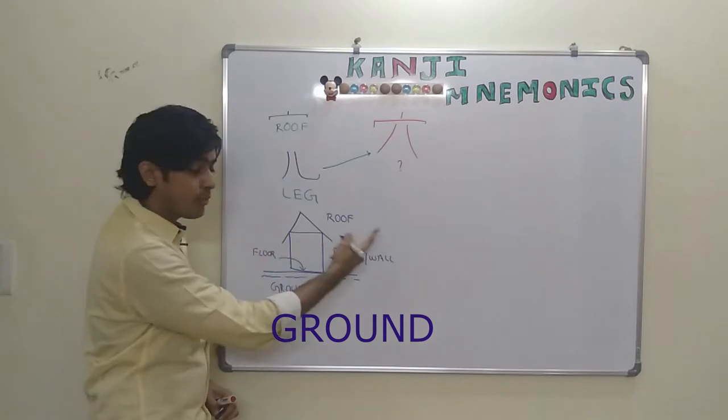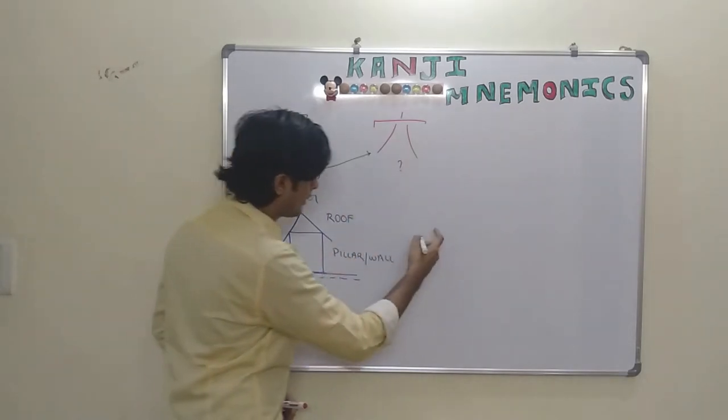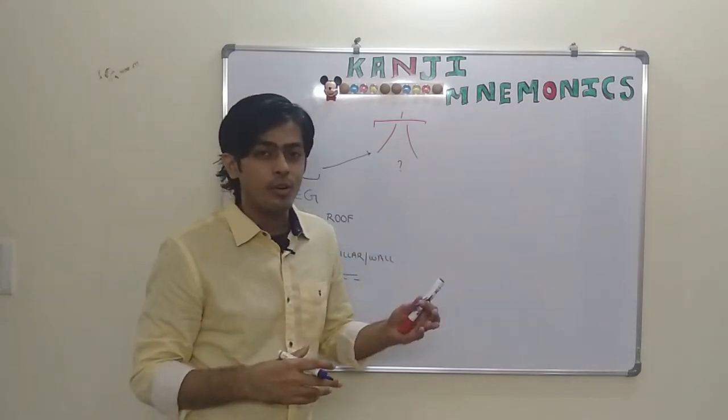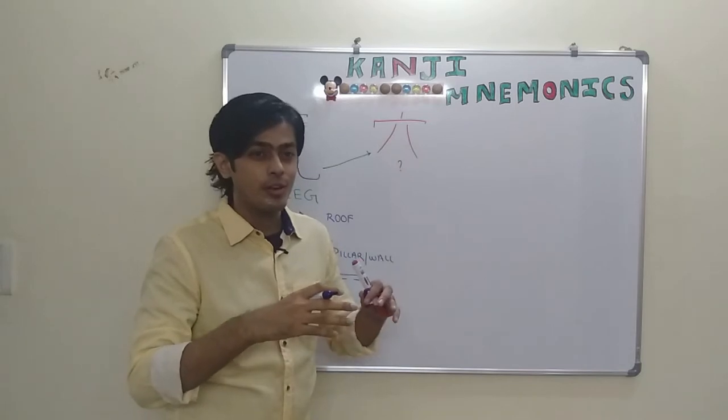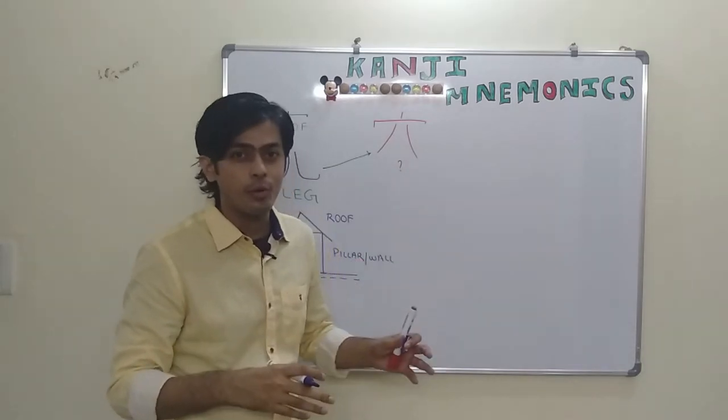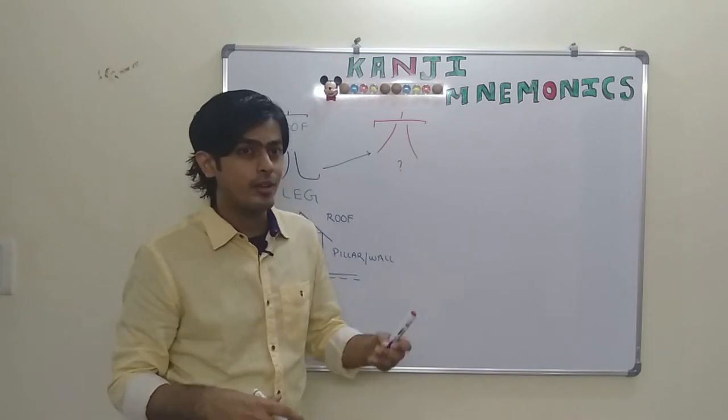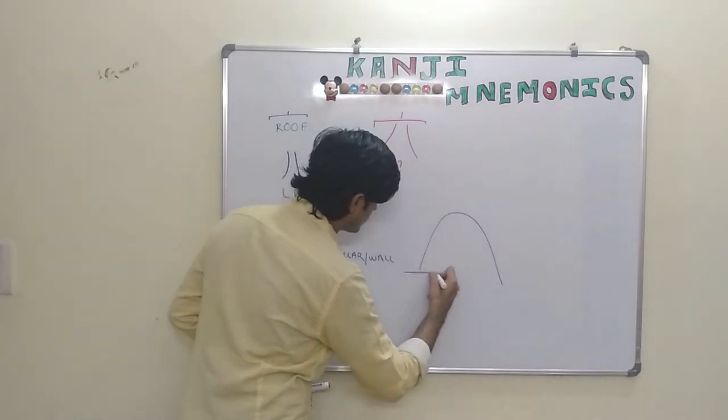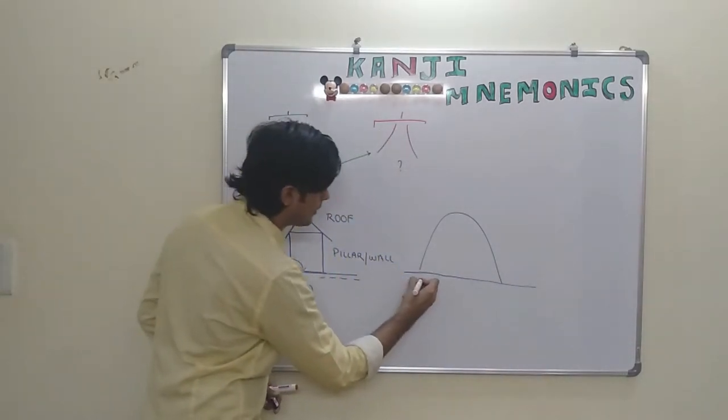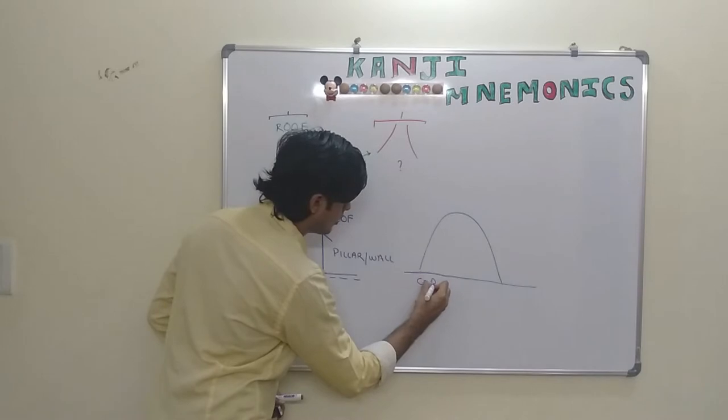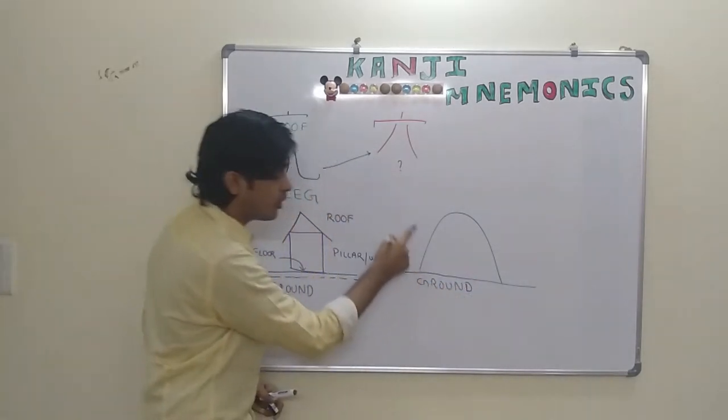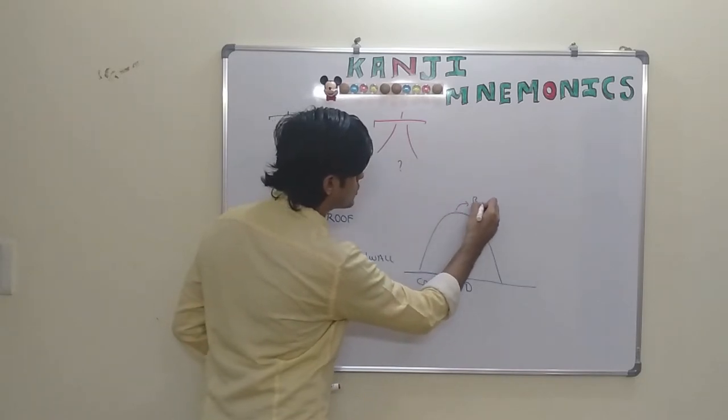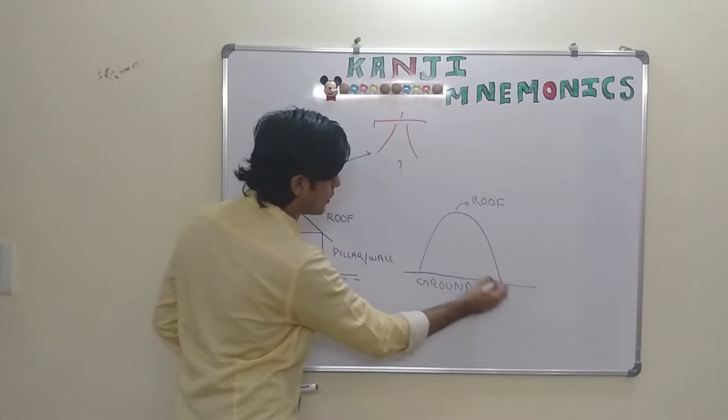Now think of a cave that our ancestors used to live in a very long time ago or even right now with animals that live in caves. So a cave is basically made on the ground and this is the top portion of it which can be referred to as roof and this is the wall.